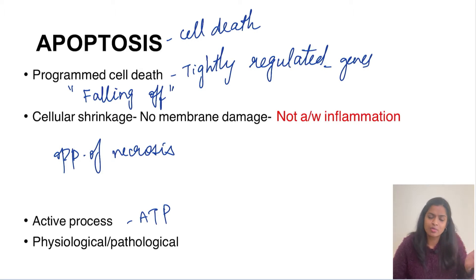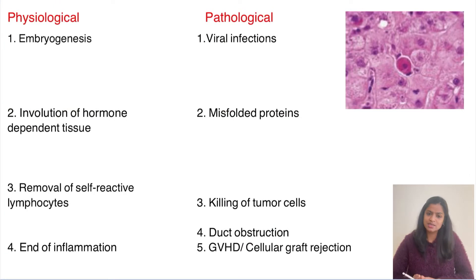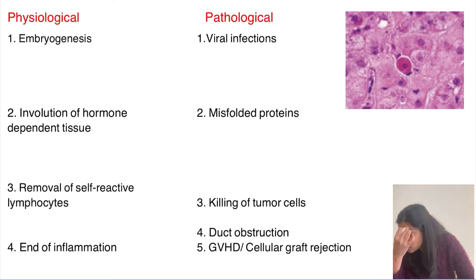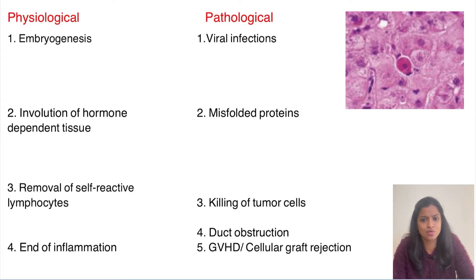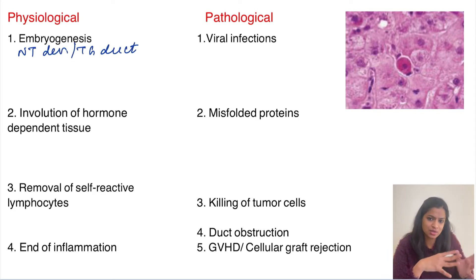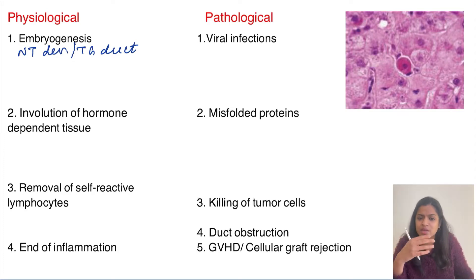Unlike necrosis, apoptosis can happen as both a physiological and a pathological process. Necrosis was only pathological. The physiological examples include embryogenesis — embryological remnants present before birth, such as notochordal development or thyroglossal duct involution, must be destroyed once their developmental work is complete, and apoptosis is what comes into play.